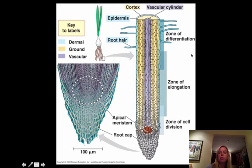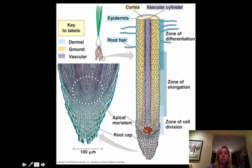Here are the four areas on a root. You're going to have the root cap, which is going to be composed of dead cells, and that's going to help protect the root as it pushes through the soil. That's going to be followed by the apical meristem, which is going to be where that primary growth is happening, and that's also going to be the zone of cell division, so you're going to see a lot of mitosis happening there.